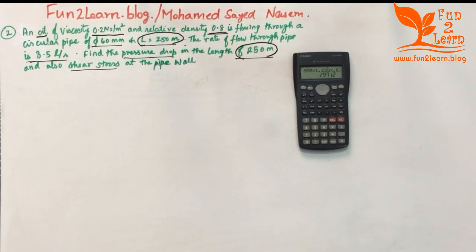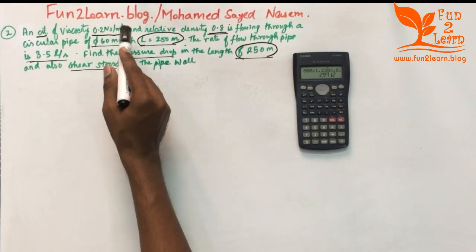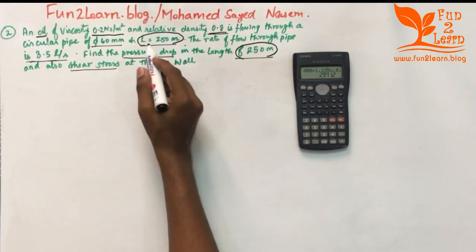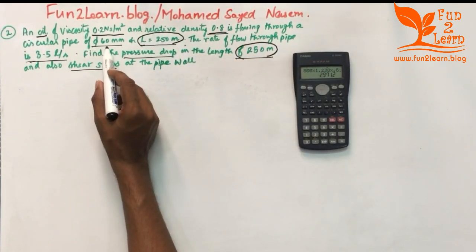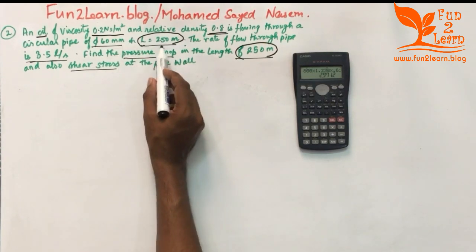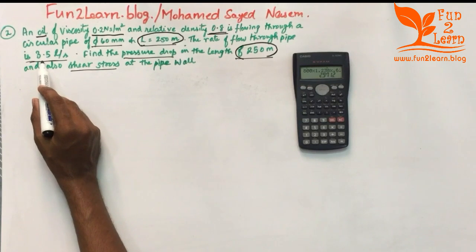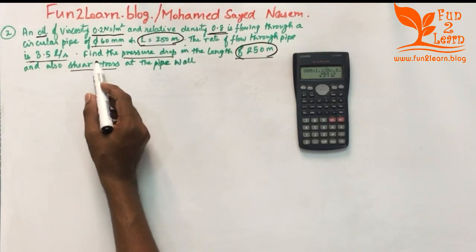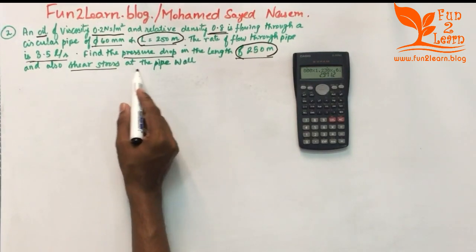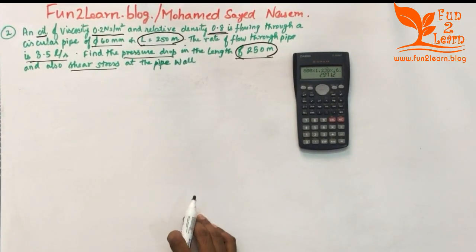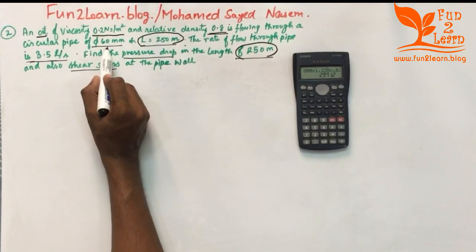In this problem, an oil of viscosity 0.2 newton-second per meter square and a relative density of 0.8 is flowing through a circular pipe of diameter 60 mm and length 250 meters. The rate of flow through the pipe is 3.5 liters per second. Find the pressure drop along the 250-meter length and also the shear stress at the pipe wall.